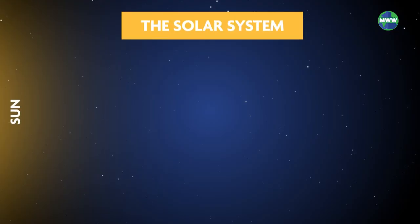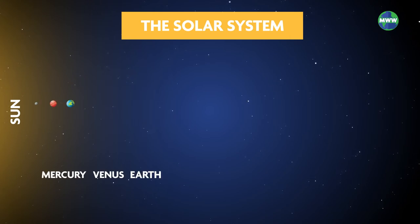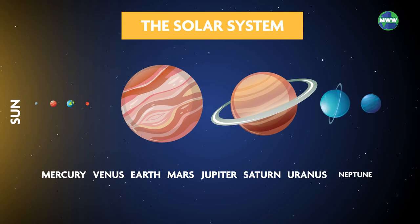The planets that orbit the sun from closest to farthest are Mercury, Venus, Earth, Mars, Jupiter, Saturn, Uranus, and Neptune.